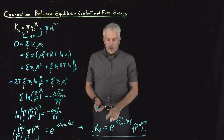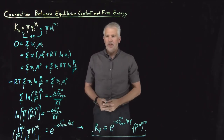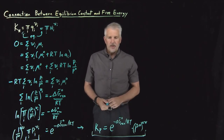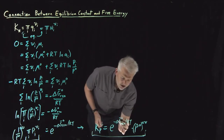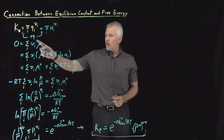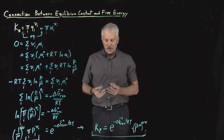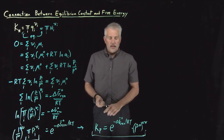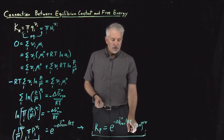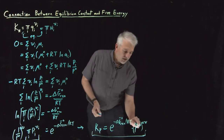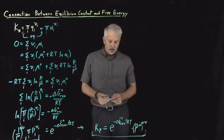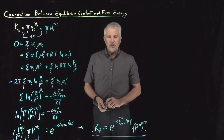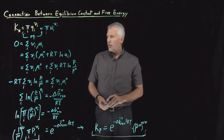That's the main result: Kp = e^(−ΔG°/RT) · P°^(Δν). This tells us how to obtain the pressure-based equilibrium constant if all we know is the Gibbs free energy of the reaction — no need to calculate partition functions. The P°^(Δν) term is there largely to ensure Kp has the correct units, as we'll see in the example.